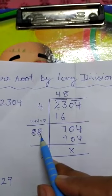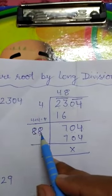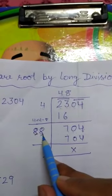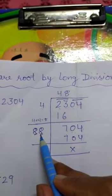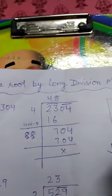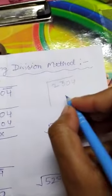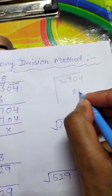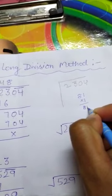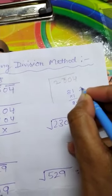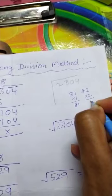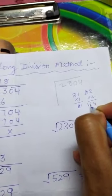The next digit is not automatically the same as 8. We need to find the right digit to pair with 8. We check: 81×1=81, 82×2=164, 88×8=704. We check which multiplication gives us 704.